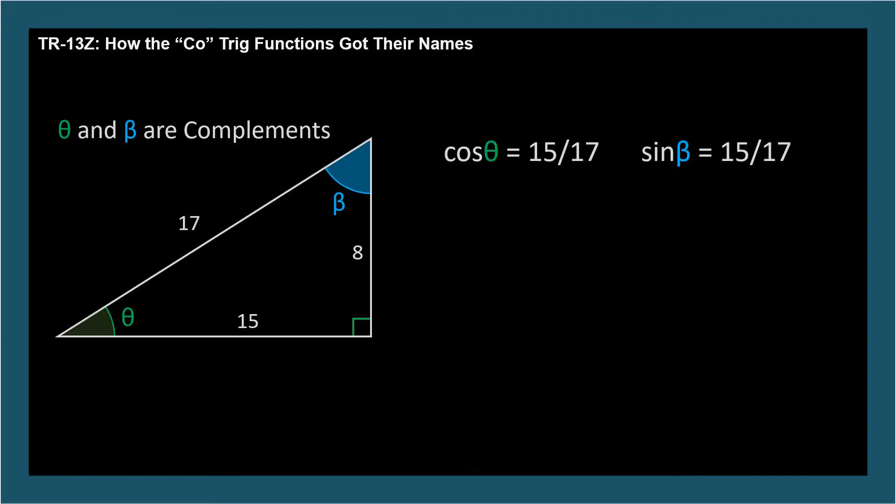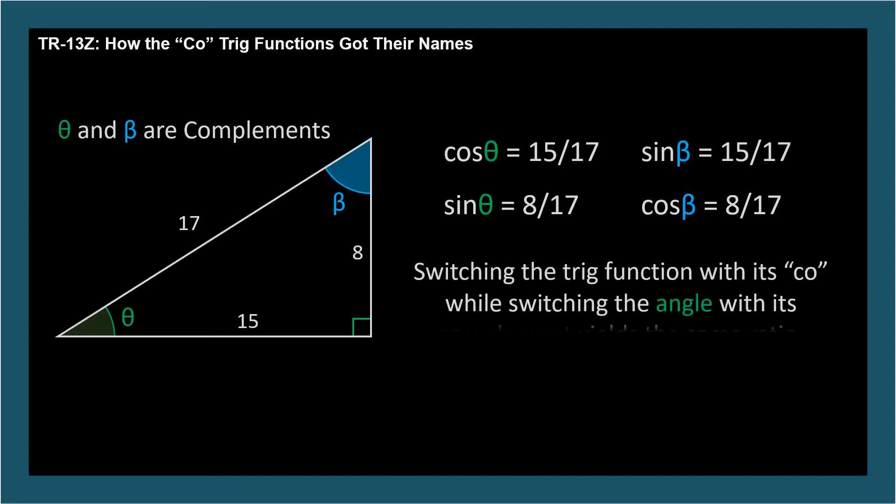Let's try sine theta and cosine beta. Can you see why they're both 8 over 17? Switching the trig function with its co-function while switching the angle with its complement yields the same ratio.